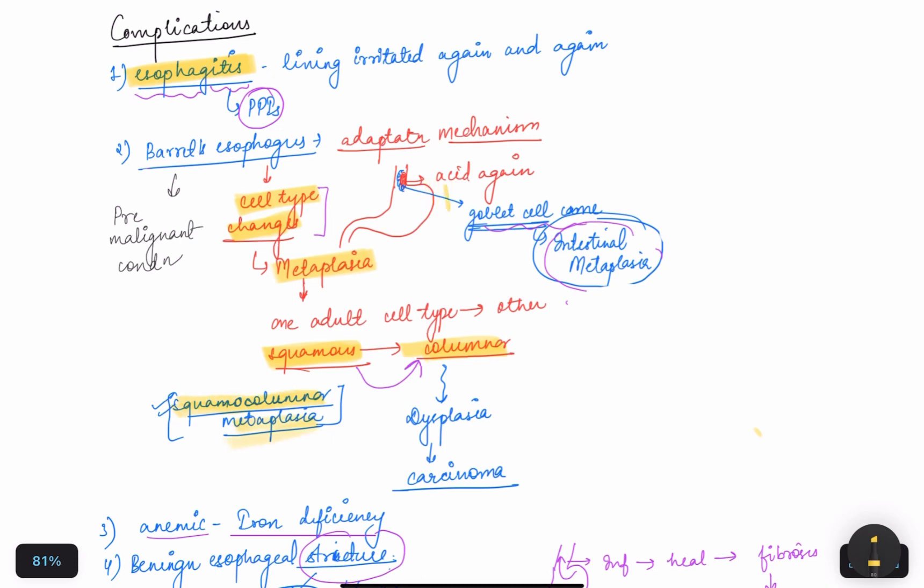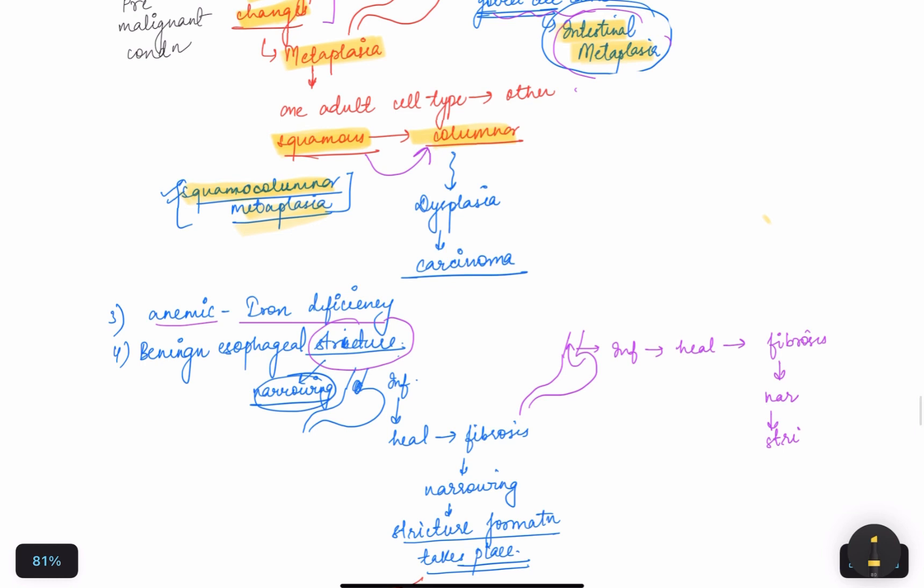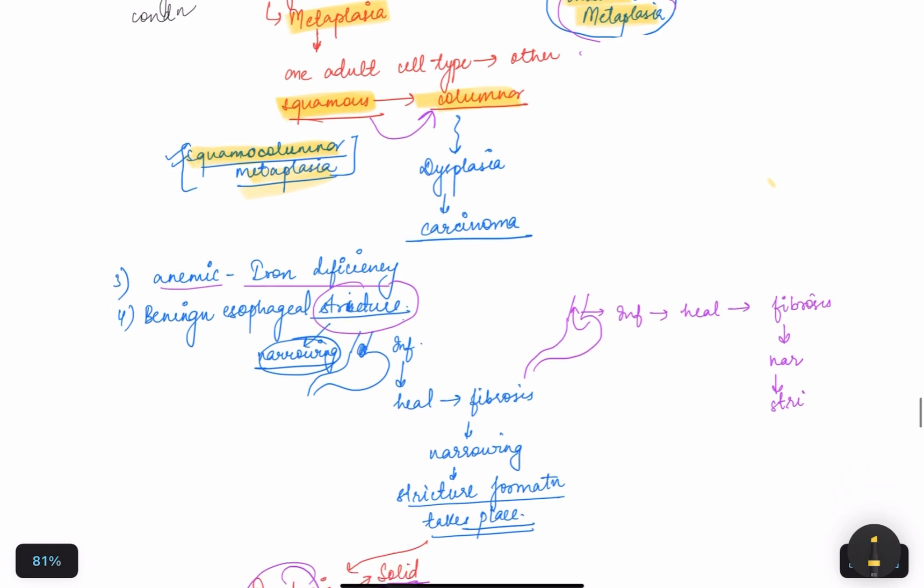We have accumulation of goblet cells due to the accumulation of acid, which is also called intestinal metaplasia. When this metaplasia prolongs for a longer time, it will lead to dysplasia and later on carcinoma. So it is also called a pre-malignant condition, which is Barrett's esophagus.